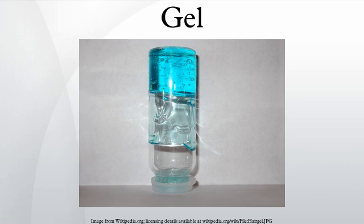By weight, gels are mostly liquid, yet they behave like solids due to a three-dimensional cross-linked network within the liquid. It is the cross-linking within the fluid that gives a gel its structure and contributes to the adhesive stick. In this way, gels are a dispersion of molecules of a liquid within a solid, in which the solid is the continuous phase and the liquid is the discontinuous phase.